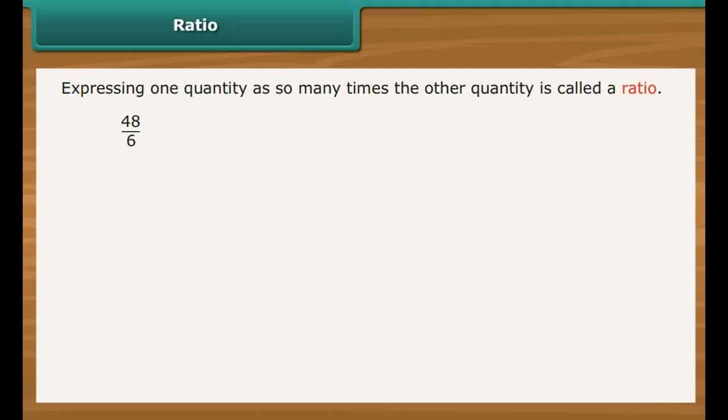48 divided by 6 is 8 divided by 1. 8 divided by 1 can also be written as 8 is to 1. Colon is the symbol used to denote ratio.